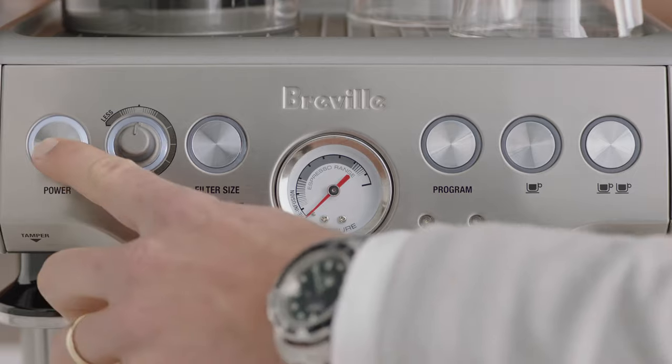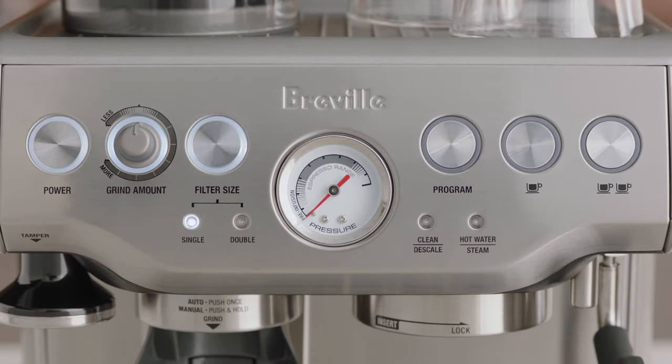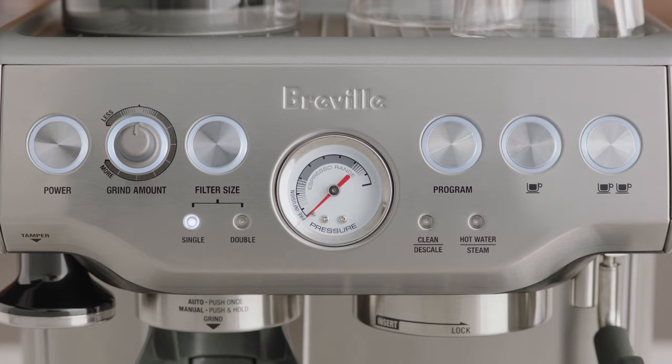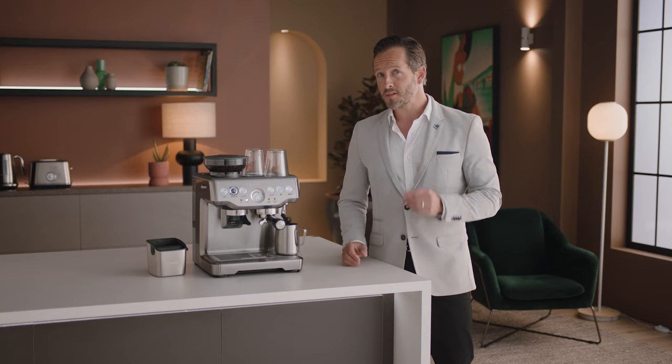When the machine has reached the correct operating temperature, the power button light will stop flashing and all button lights in the control panel will illuminate. The machine is now in standby mode. Now the machine is set up, you're ready to make your first coffee.